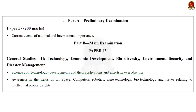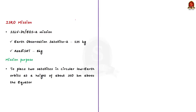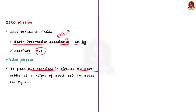The syllabus relevant to this article is highlighted for your reference. Under this mission, the launch vehicle was carrying two satellites. One is the Earth Observation Satellite 2, that is EOS-2, which weighed about 135 kilograms. The other is Azadi Sat, which weighed about 8 kilograms. The purpose was to place these two satellites in circular low Earth orbits at a height of about 350 kilometers above the equator.